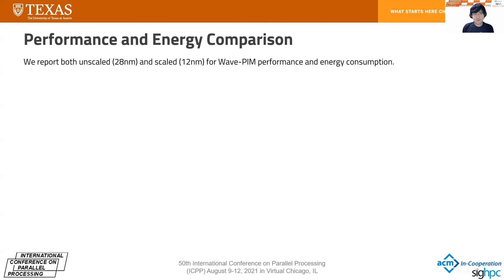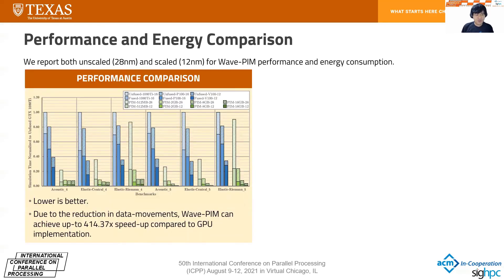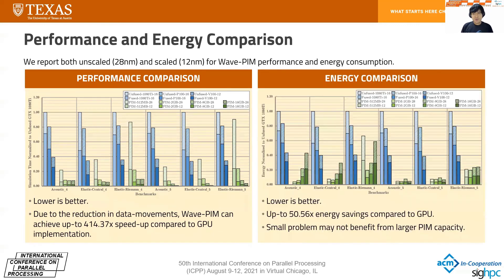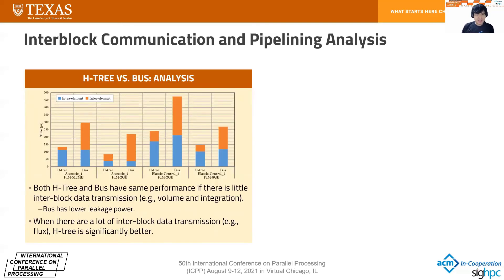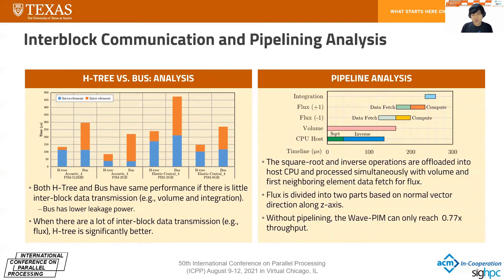We scale our PIM performance and energy to 12 nm for a better apples-to-apples comparison. For performance, WavePIM can achieve up to 400 times speedup compared to GPU implementations. For energy, WavePIM can achieve up to 50 times energy savings compared to GPUs. We also analyzed interblock communication: H3 and bus have the same performance when there is little interblock data transmission, such as in volume and integration. But when there is a lot of interblock data transmission, such as in flux, H3 is significantly better. For pipelining, we overlap square root and inverse operations on the host CPU with volume computation in PIM and data fetching for the next flux. Without pipelining, WavePIM can only reach 0.77 times the throughput shown with pipelining.